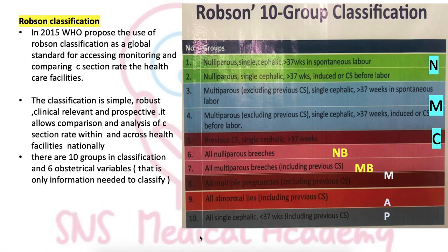Groups 8, 9, and 10 — remember with the mnemonic MAP: M for all multiple pregnancies (Group 8), A for all abnormal lie with or without previous C-section (Group 9), and P for all preterm (Group 10 — all preterm pregnancies).